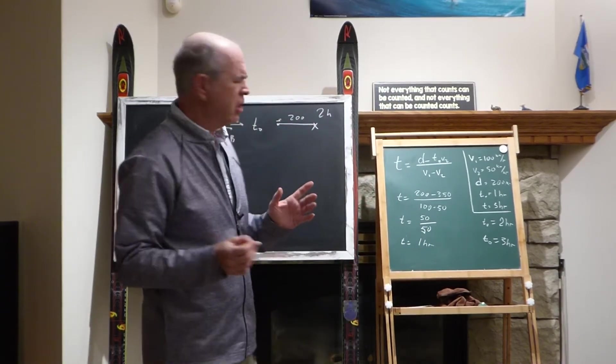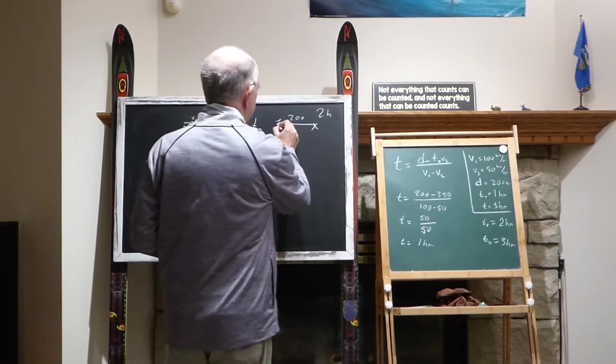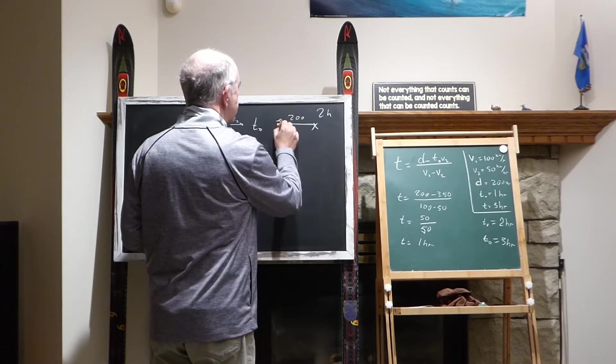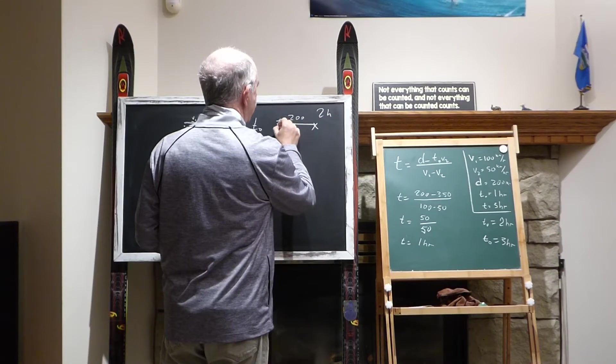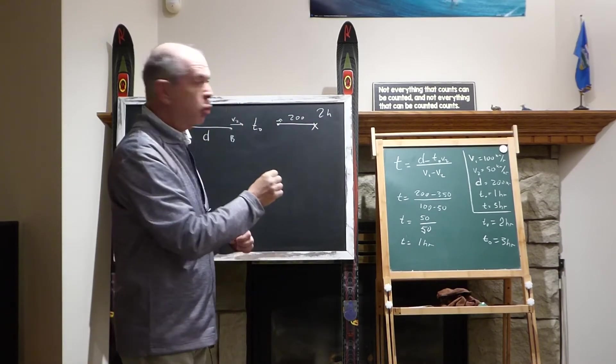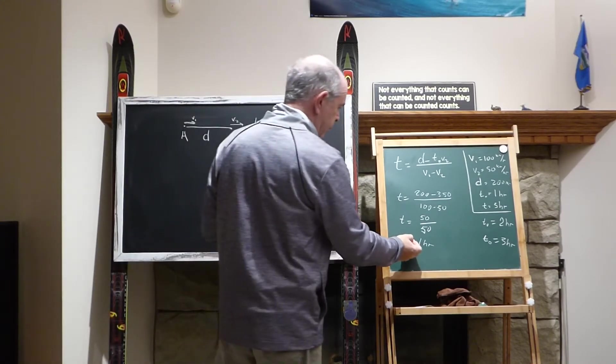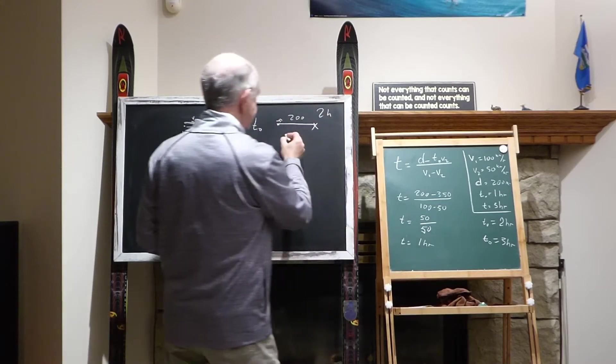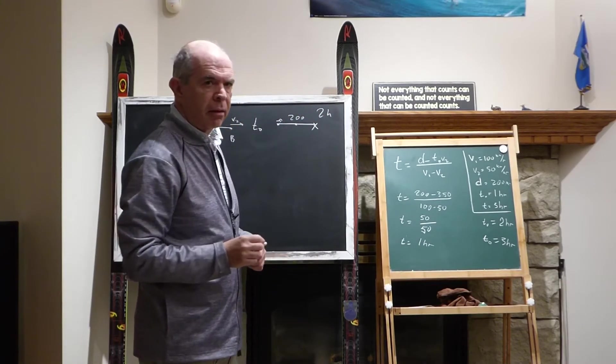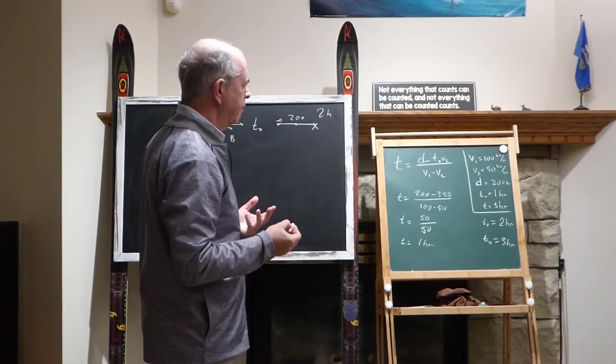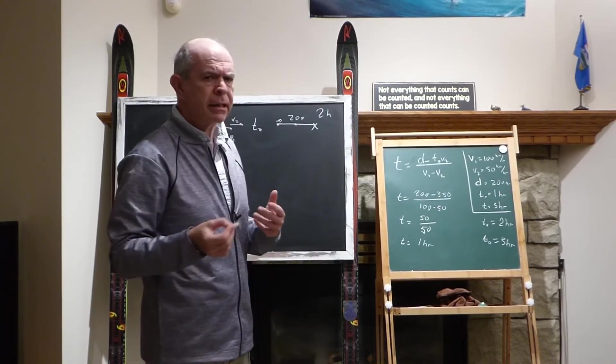And that's kind of strange, because we know that for this car to reach this point, two hours is required. But the formula tells us that they will meet within one hour. How could that be?